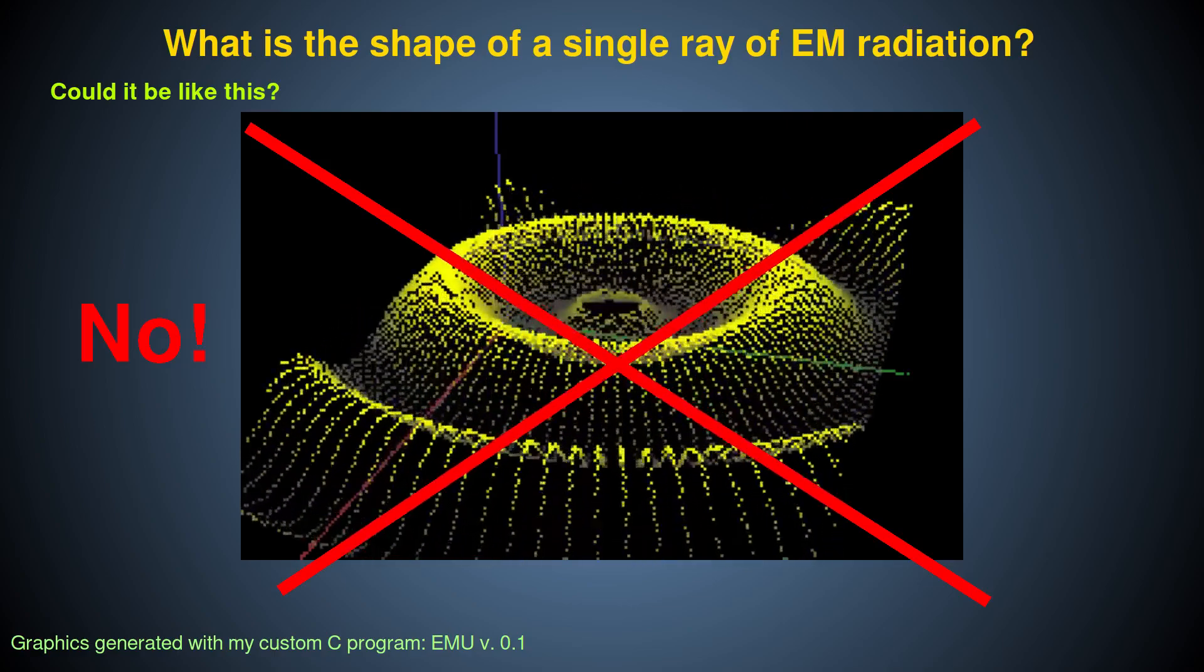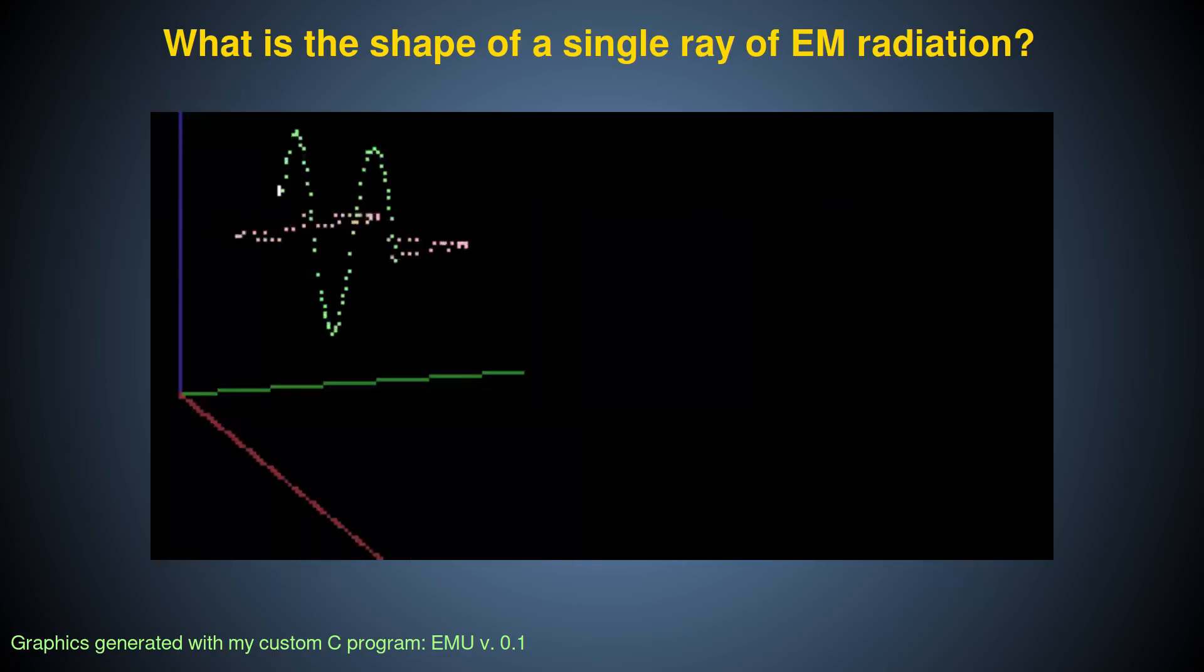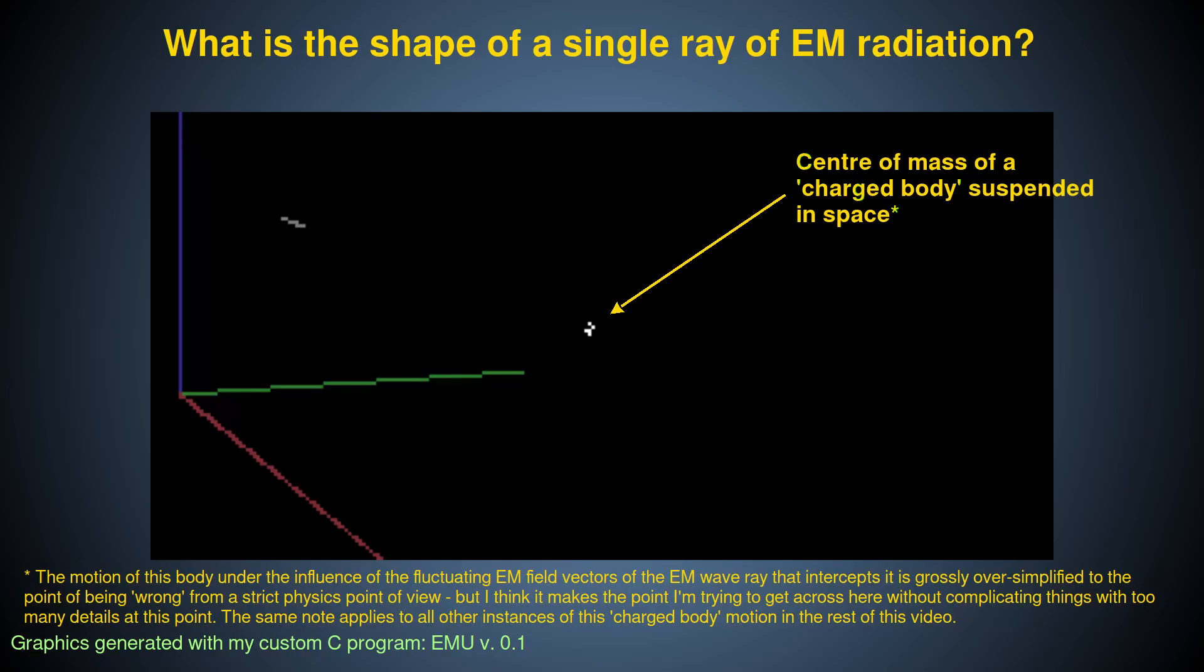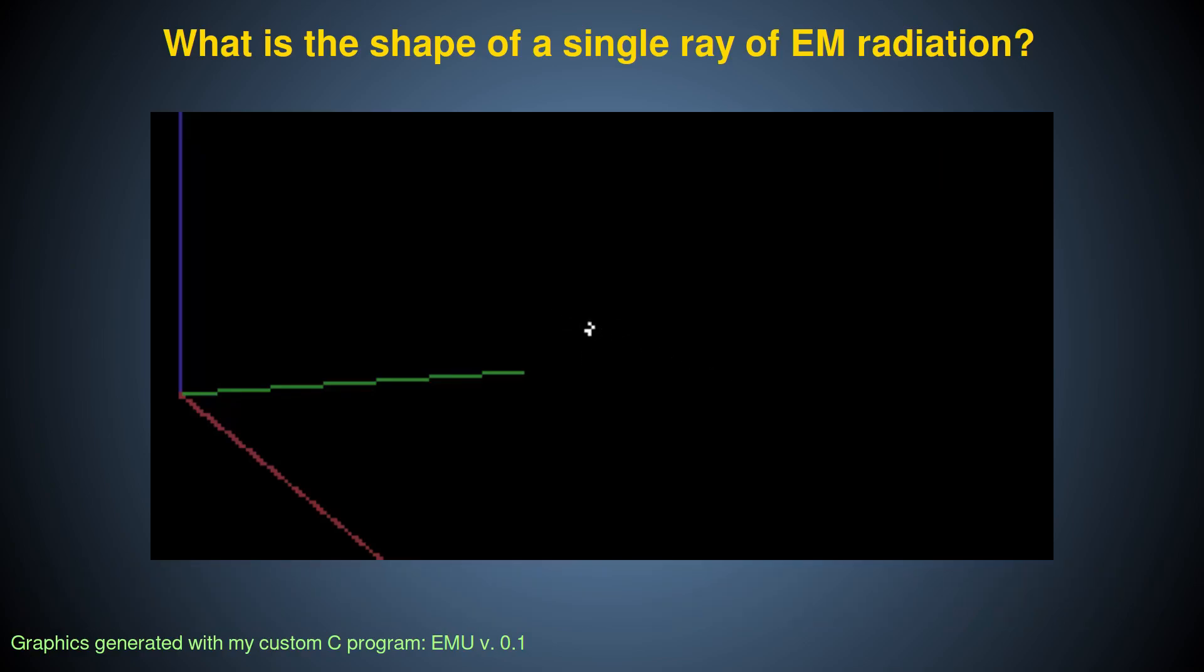The actual shape of this single ray of EM wave radiation in this diagram is just a single, one-dimensional, completely straight line along the axis of travel. These sinusoidal variations represent the strength and direction of the electric and magnetic forces that will be felt by a charged body that happens to be intercepted by the single, straight line ray. To make this clearer, I'll use a different visualization.